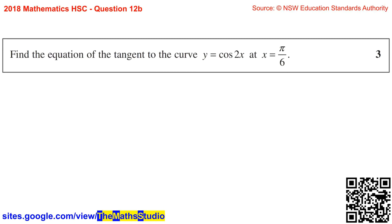Question 12b. Find the equation of the tangent to the curve y equals cos 2x at x equals pi over 6.